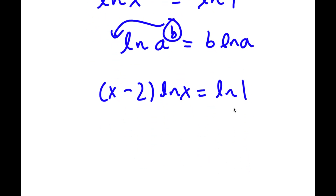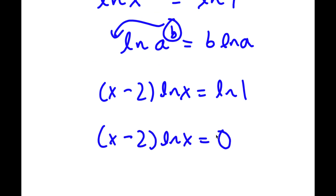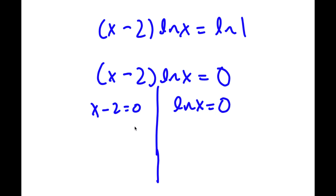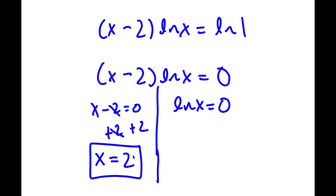Now, ln 1 is simply equal to 0. So now I have x minus 2 times ln x is equal to 0. This actually gives me two equations: x minus 2 equals 0, and ln x equals 0. For x minus 2 equals 0, I add 2 on both sides and get x equals 2. So this is one solution.